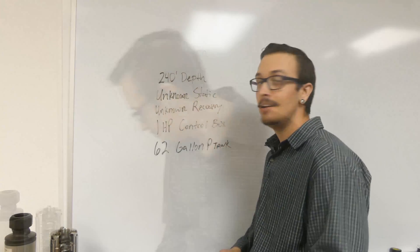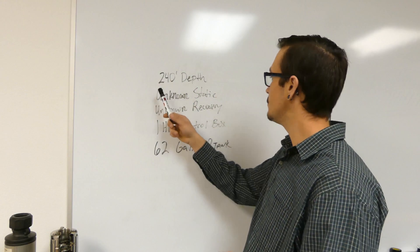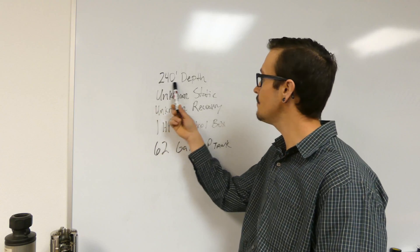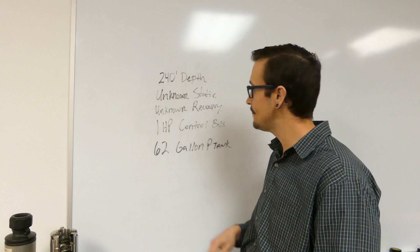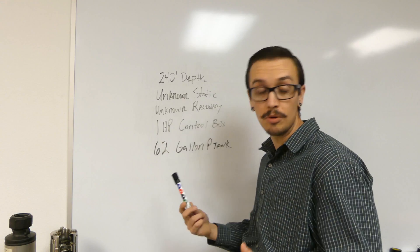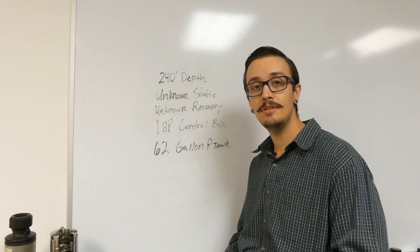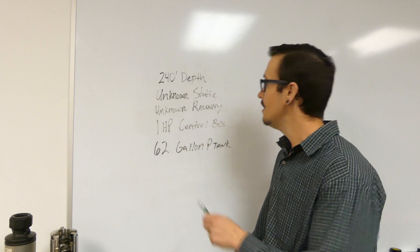All right, so here we are with a sample problem. Here's what we know: we've got 240 foot depth, we looked at the control box and it said one horsepower, we looked at the pressure tank and it was a 62 gallon pressure tank.